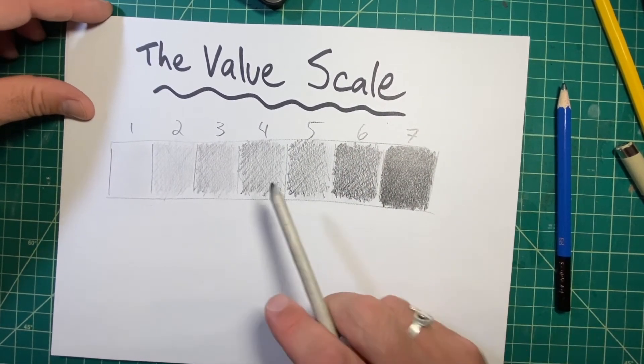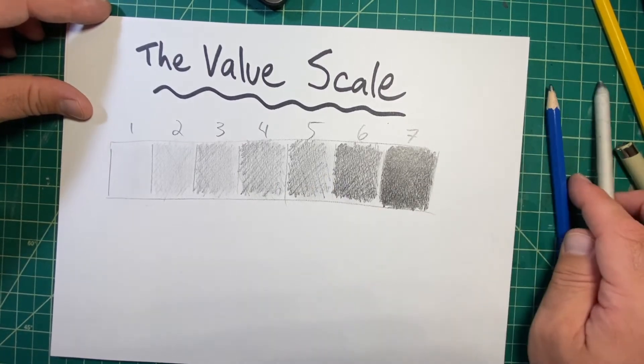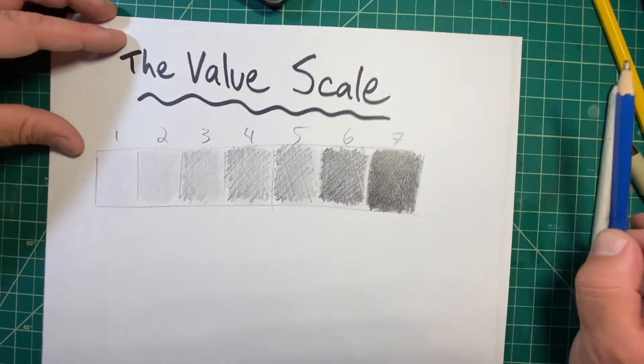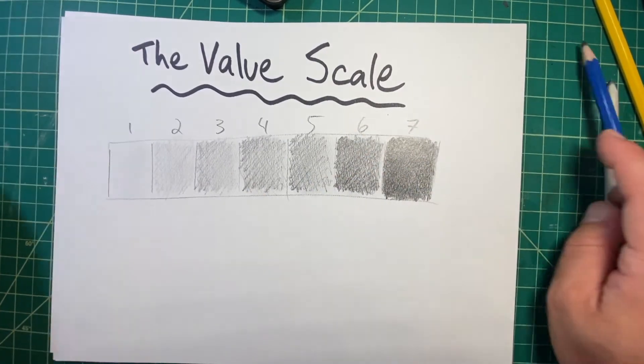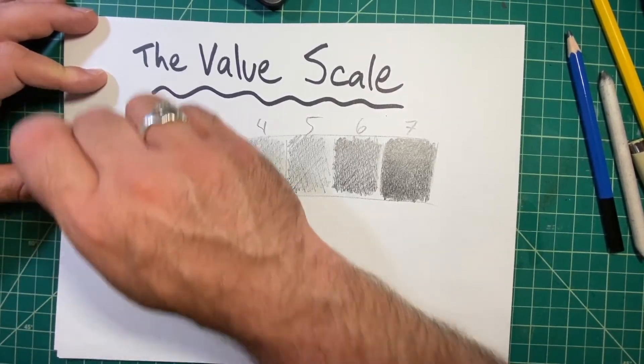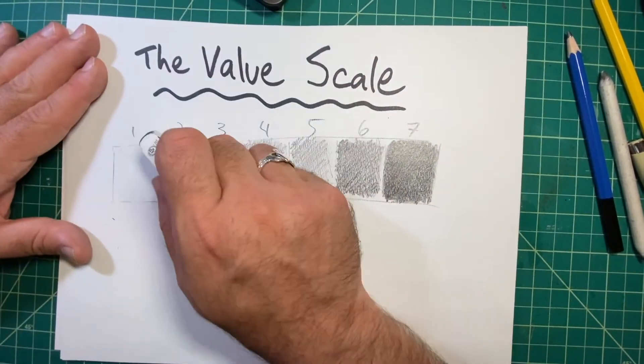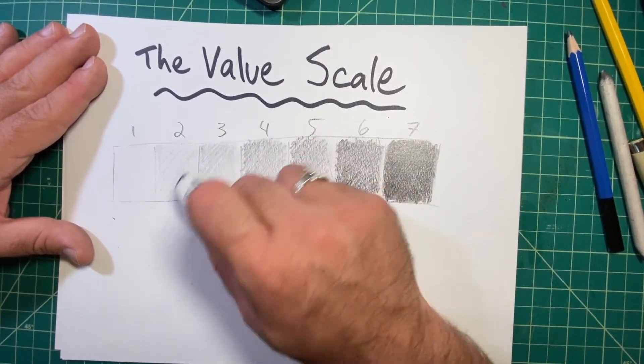Now, looking at this, I'm seeing that four and five, in fact, three, four, and five are all very, very similar. So there's a couple options you can do. I can try to make each one progressively darker, or I can try to make each one progressively lighter. So if I just erase lightly what's in number one, I can then erase a little bit in number two, and a little bit in number three.